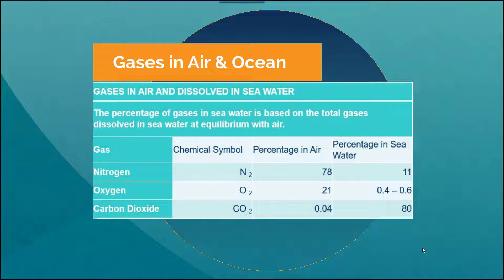You can probably guess why there need to be different adaptations in animals to be able to work with such a low percentage of oxygen that is required for all marine living organisms. Carbon dioxide, however, has the flip side — there's a very small percentage found in air naturally and a large percentage that is dissolved in seawater.